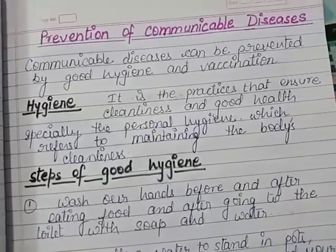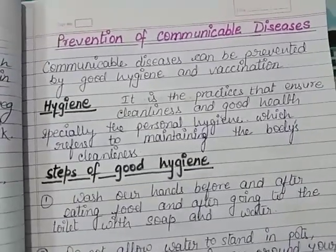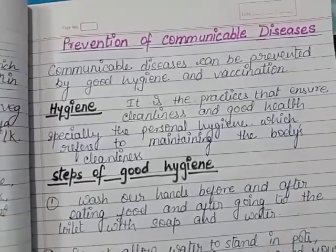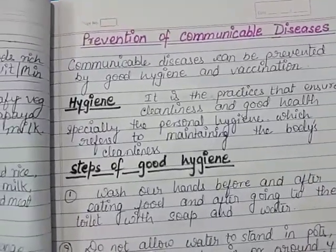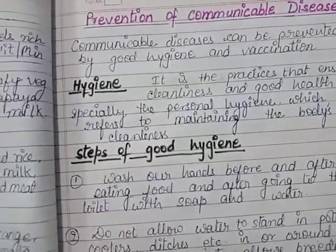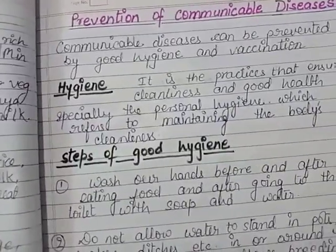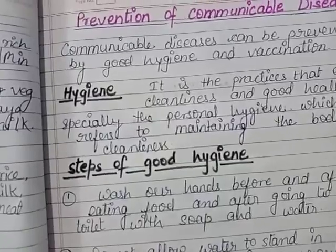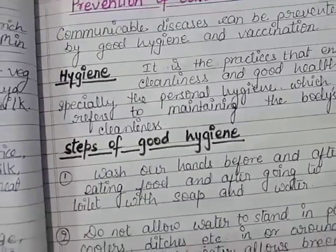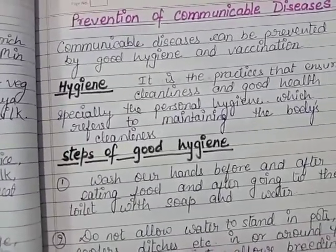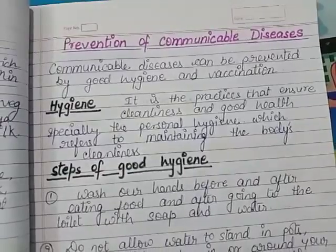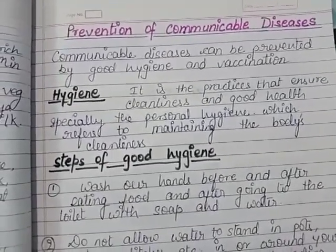Today's topic is prevention of communicable diseases. How can we prevent diseases from spreading? Prevention means the action of stopping something from happening. We have to perform some action against the spread of disease. Communicable diseases can be prevented by good hygiene and vaccination.